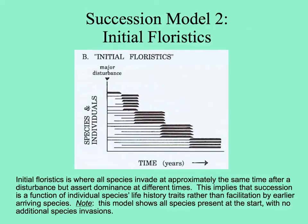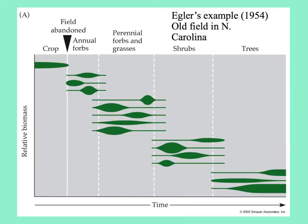The other model, initial floristics, differs, although you may see the same patterns predominating. The assumption here is that all species are always present, but different ones assert dominance at different stages in succession. This model shows every species present almost at the beginning, with no additional ones arriving. Almost any dataset can be examined and you can see both patterns.